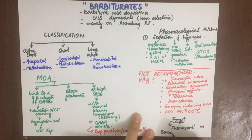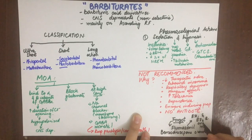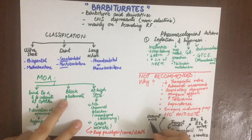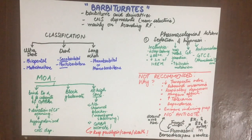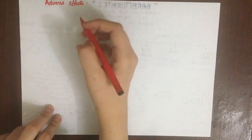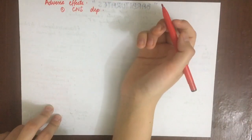One thing I forgot to mention in the benzodiazepine video: both the BZ1 and BZ2 receptors are antagonized by flumazenil, so in cases of benzodiazepine toxicity, flumazenil can be used. However, flumazenil cannot work in barbiturate toxicity.